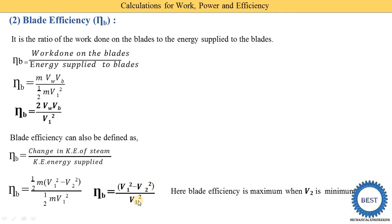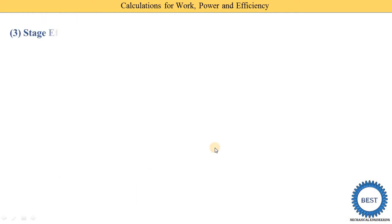Blade efficiency is maximum when V2 is minimum. If V2 equals zero, the equation becomes V1²/V1², meaning blade efficiency is 100%. So blade efficiency is maximum when V2 is minimum.